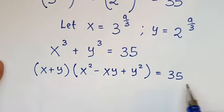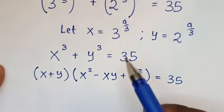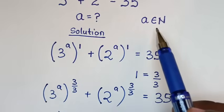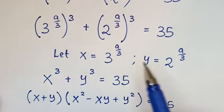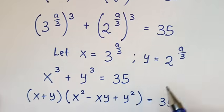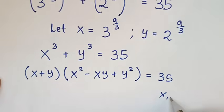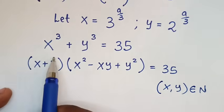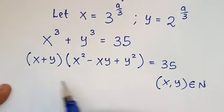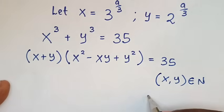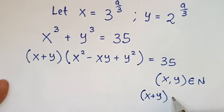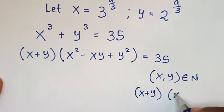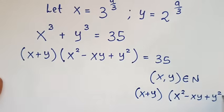Now from this step, note the conditions. Here, a is element of a natural number. Here we have a in this power and here we have a. So x and y — x comma y is also element of a natural number. And let's do the comparison between x plus y times x squared minus xy plus y squared.